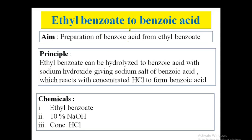Let's see the preparation. What's the aim of the experiment? Preparation of benzoic acid from ethyl benzoate. What's the principle behind this? Ethyl benzoate can be hydrolyzed to benzoic acid in basic medium, so hydrolysis reaction is the basis for this particular reaction. In the presence of basic medium, esters are converted to acids — ethyl benzoate is hydrolyzed to benzoic acid with sodium hydroxide, giving the sodium salt of benzoic acid.